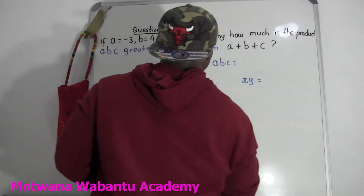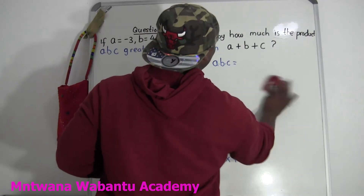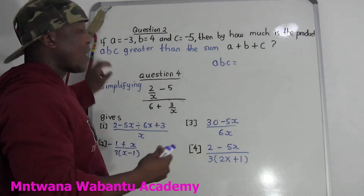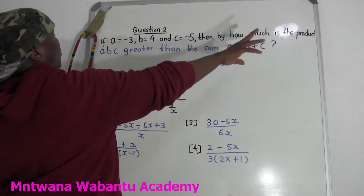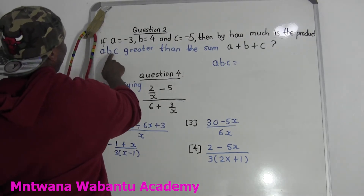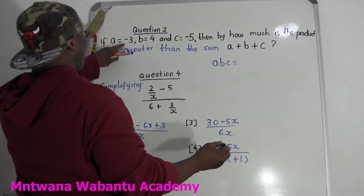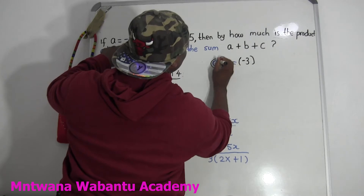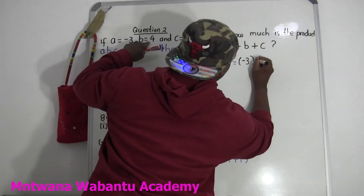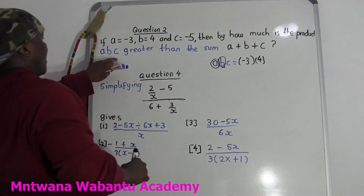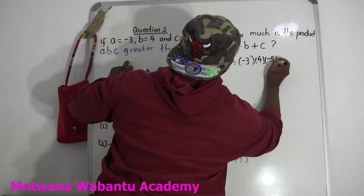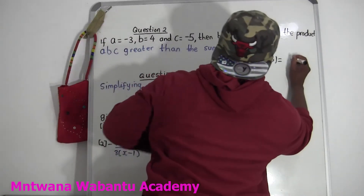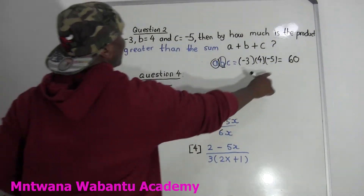So let's get the product. A equals negative 3, so I'll replace A with negative 3. Now I'll replace B with 4 and replace C with negative 5. Let's multiply them all. Negative 3 times 4 equals negative 12. Negative 12 times negative 5 — we're going to get positive 60. So the first group we know is positive 60.